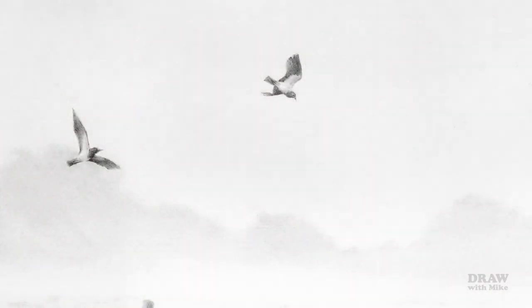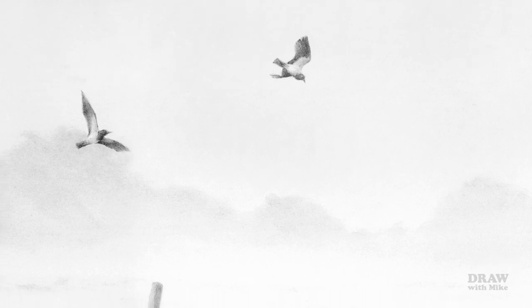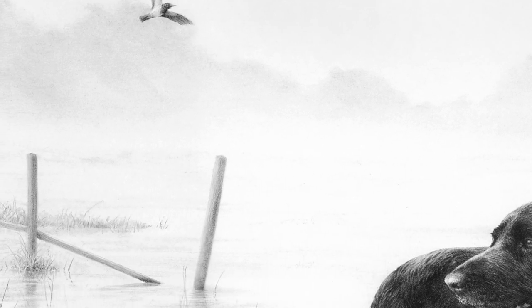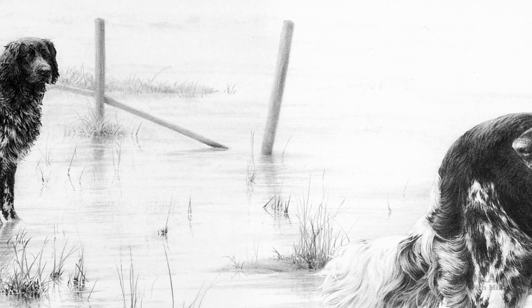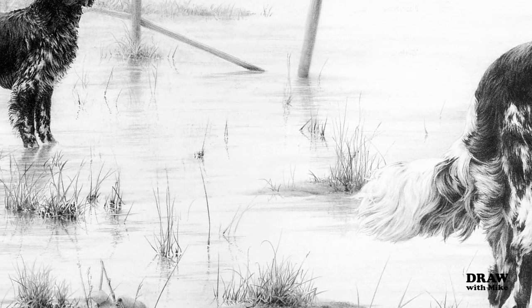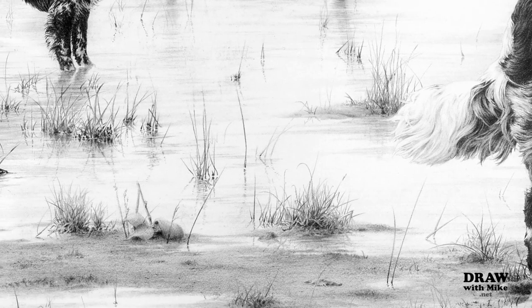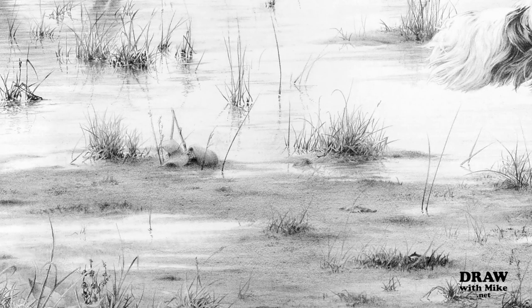For example, here the sky needs to be smooth, so we've used a hard grade, a 2H in this case. The same applies to the water - you expect it to be smooth. And the wet mud looks grainy because I used a soft grade.